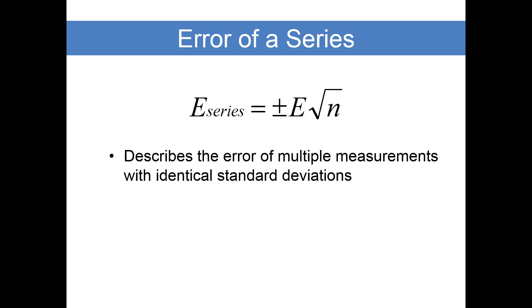Error of a series is the process we use when we're describing the error of multiple measurements that have identical standard deviations. For instance, let's say you are measuring a 1,000-foot line with a 100-foot long steel tape.